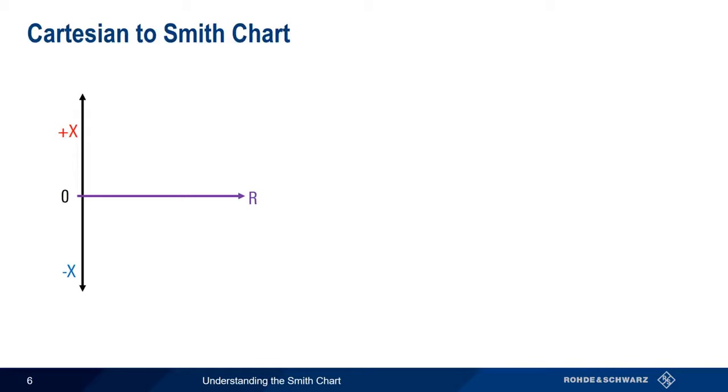Why not just show these values on our old friend, the Cartesian coordinate plane? As you should already know, a complex impedance consists of a purely resistive part, R, as well as a reactive part, X.